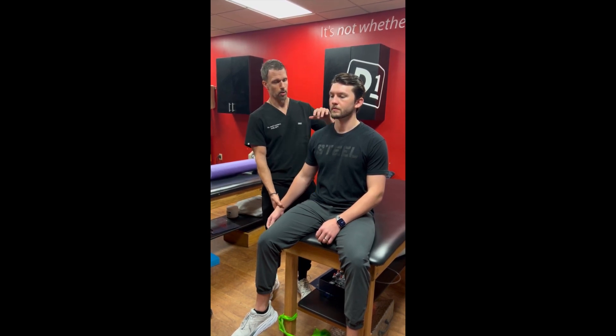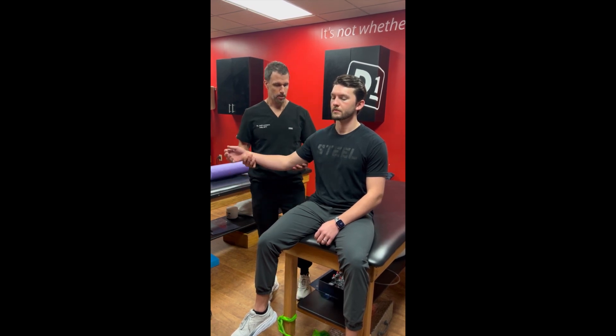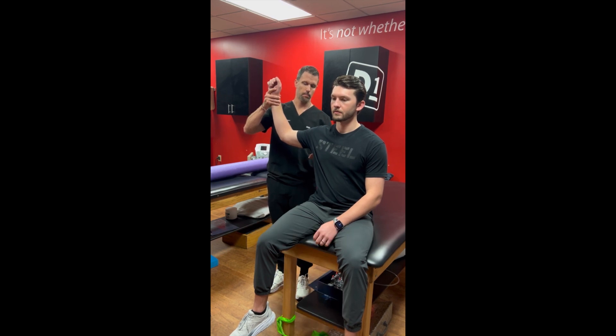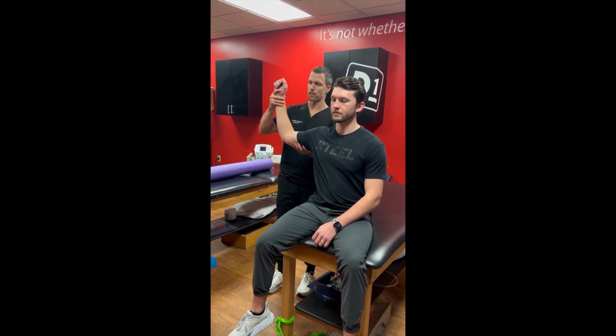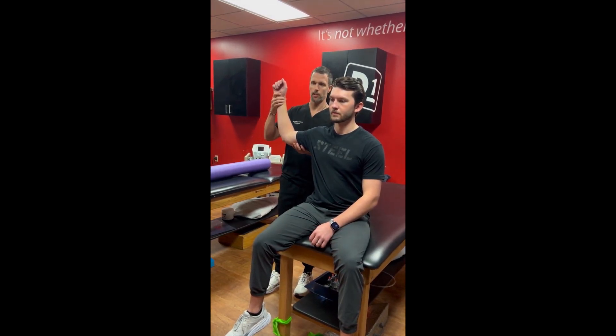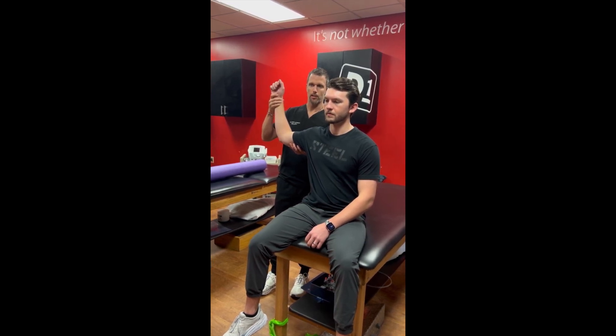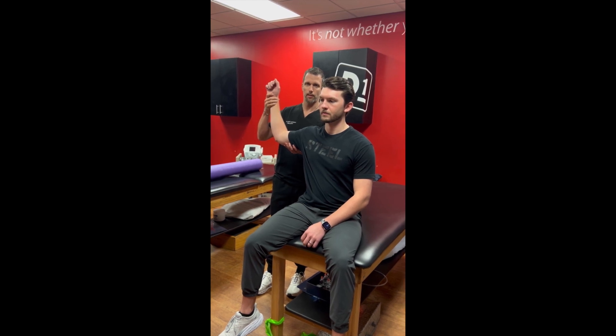Now let's look at this next test for the pec minor. It's called the Roos test. I'm going to bring his shoulder and elbow to 90 degrees, and I'll feel for the pulse here. This puts some traction on the pec minor tendon, and I still feel a really good pulse here. I'll check that for a minute.